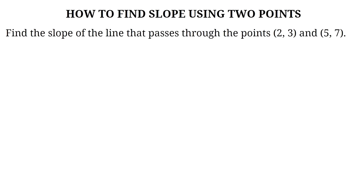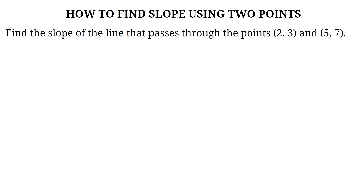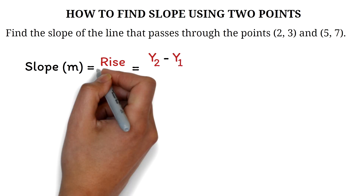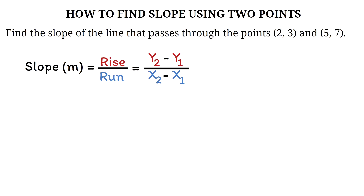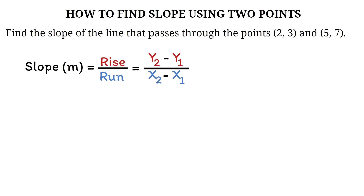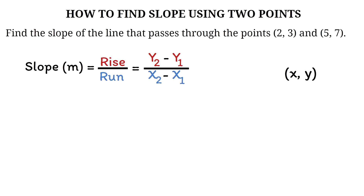Let's say we are given the two points (2, 3) and (5, 7), and we want to find the slope of the line that passes through them. To find the slope m, we look at the rise — how much the y values change — compared to the run — how much the x values change. For any point, the first number is the x value and the second is the y value. Label either point as 1 or 2. I'm choosing (2, 3) as point 1 and (5, 7) as point 2, giving us x1, y1 and x2, y2.